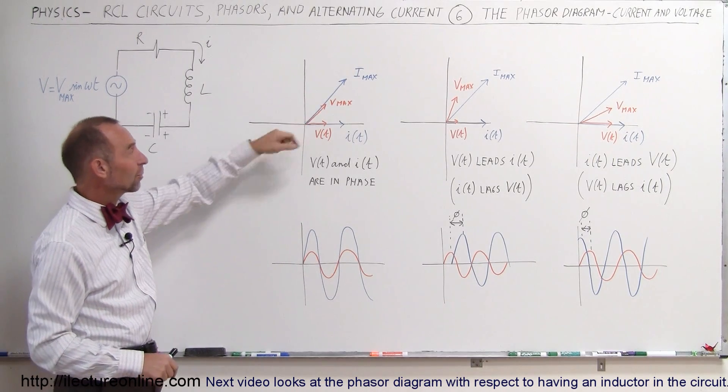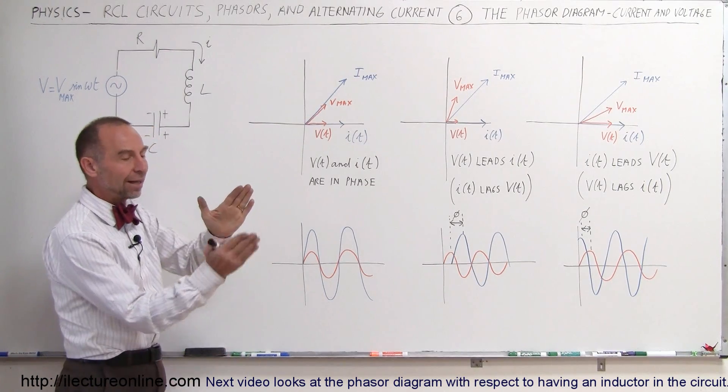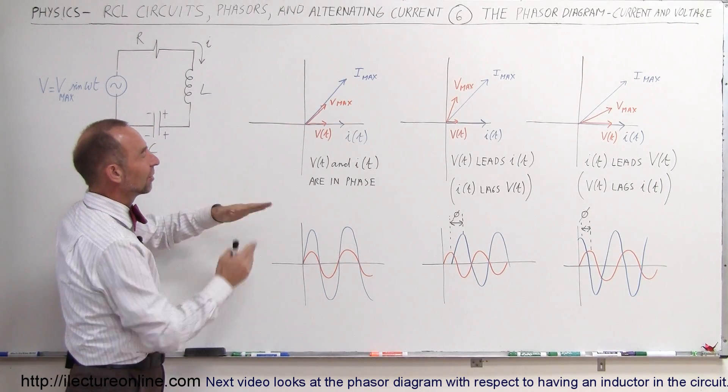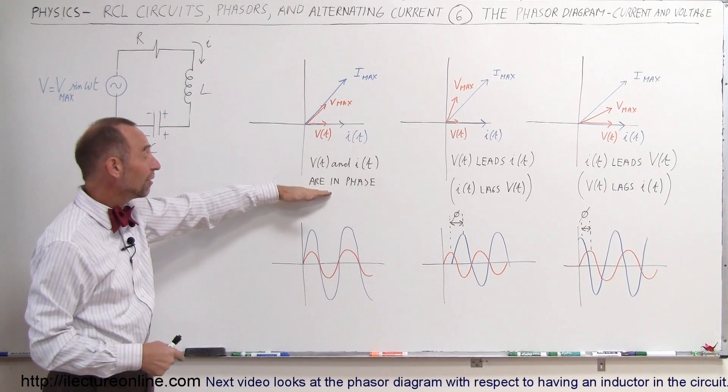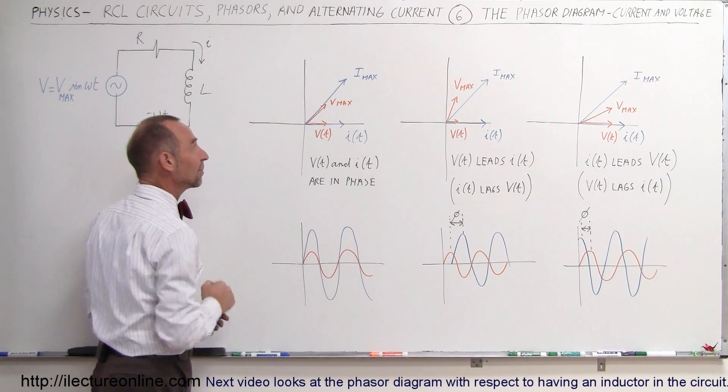For example, if we draw something that looks like this you can see that the current and the voltage are at the exact same phase, so therefore we say that the current and voltage are in phase and that means that they reach the maximum value and the minimum value at the very same time.